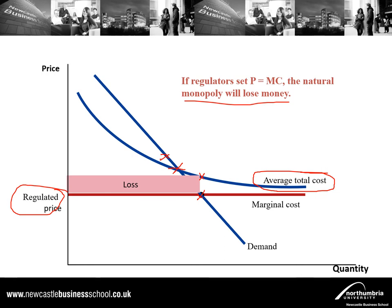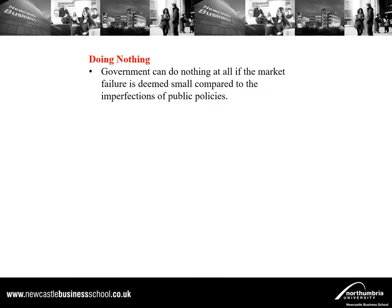However, a problem arises when regulators are captured — they may start championing the cause of the monopoly. In that situation, limits on profits or zero-profit pricing no longer hold; monopolies start maximizing profits because they have captured regulators and regulation becomes ineffective. A final solution is doing nothing. Whenever there is an attempt to intervene in a market, some degree of inefficiency results. If the market failure from a monopoly is smaller than that arising from regulating it, we would rather simply do nothing — choosing the lesser of two evils.